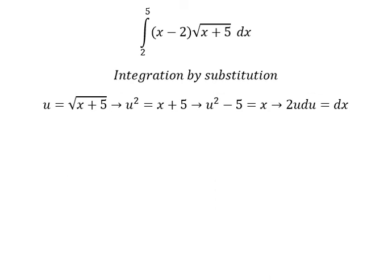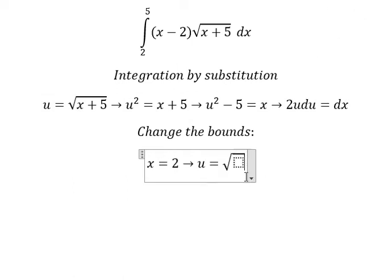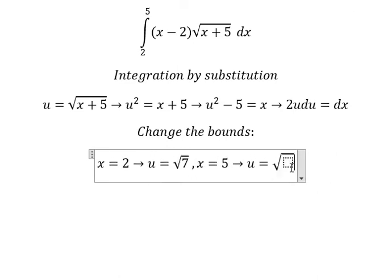Next we need to change the bounds. When x equals 2, we substitute to get u equals the square root of 7. When x equals 5, we substitute to get u equals the square root of 10.